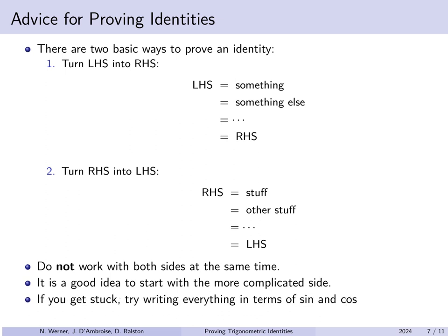If you get stuck, remember that tangents, cotangents, and all other trig functions can always be replaced with sines and cosines. This reduces your options and makes it easier to identify missing steps. Also, the Pythagorean identities come into play frequently — not always in the form sine squared theta plus cosine squared theta equals 1, but also as sine squared theta equals 1 minus cosine squared theta, or cosine squared theta equals 1 minus sine squared theta.